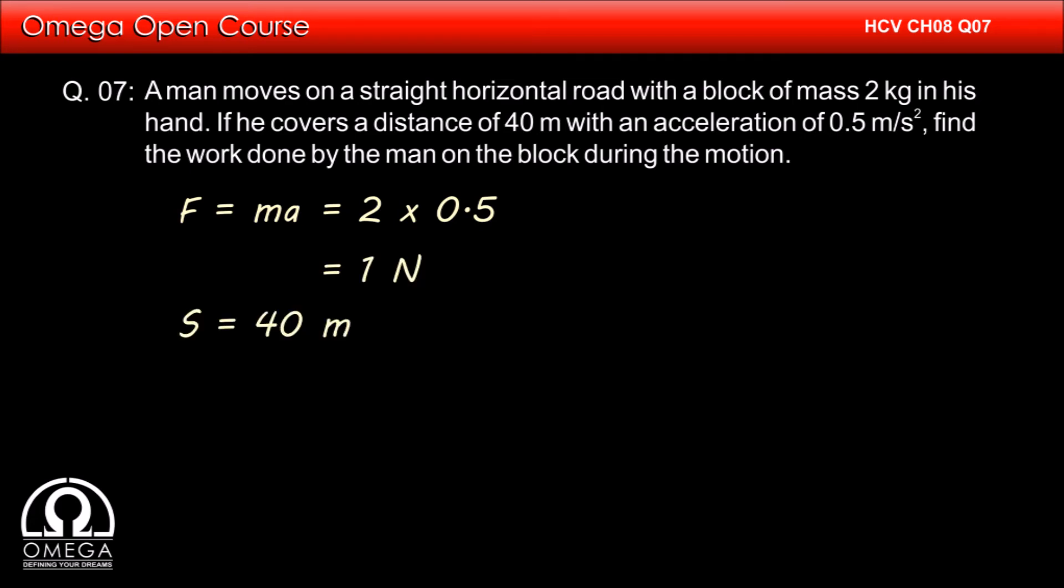The horizontal displacement is 40 meters. Therefore work is equal to horizontal force into horizontal displacement, that is 1 × 40 = 40 Joules. This is our answer.